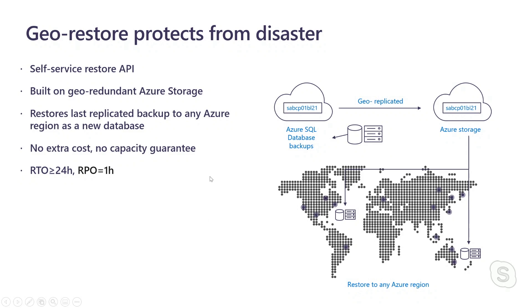RTO for geo-restore is about 24 hours and RPO is about one hour. It's the cheapest way of disaster recovery, but it has higher RPO and RTO values. If you need lower RPO and RTO, then geo-replication or auto-failover groups might be a better solution. Treya has really shown us a lot here — the use cases for automated backups as well as features and capabilities from point-in-time restore to long-term retention to geo-restore. In the next video, Treya is going to dive deeper into how to set up, configure, and leverage these different types of backups. If you like this video, please like and subscribe to our channel, leave us a comment, and tune in for the next episode of Data Exposed.